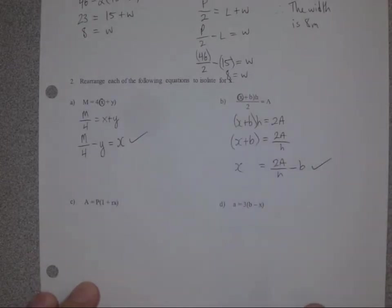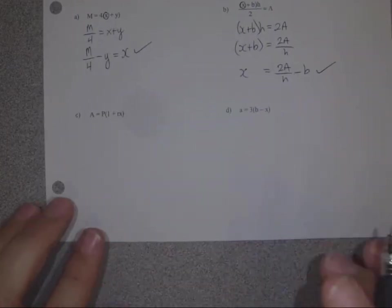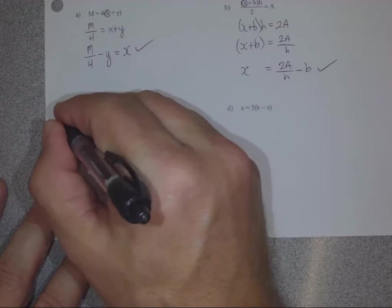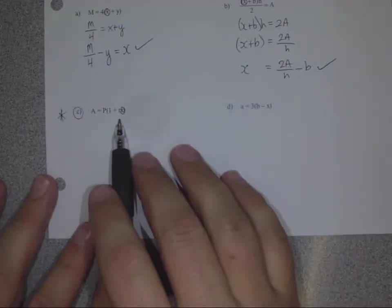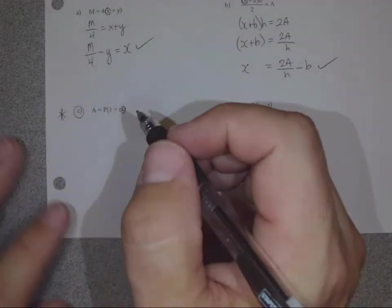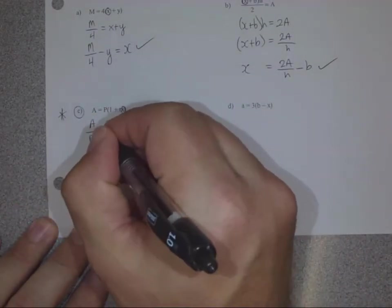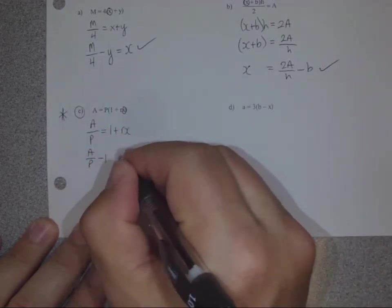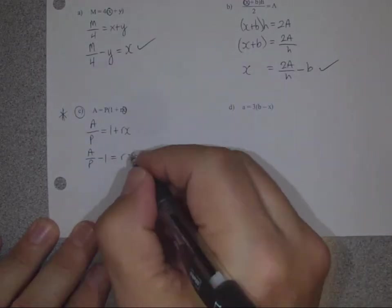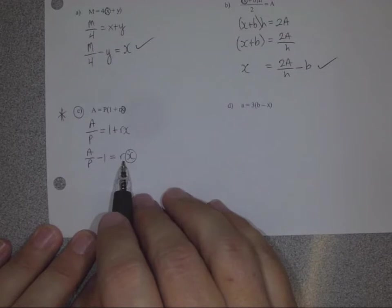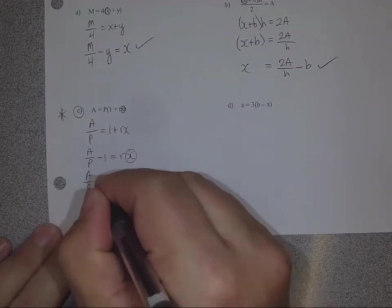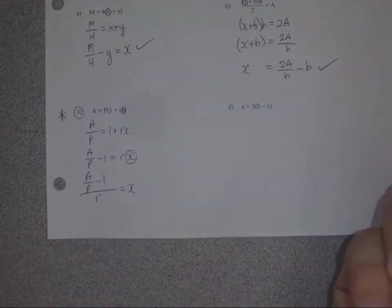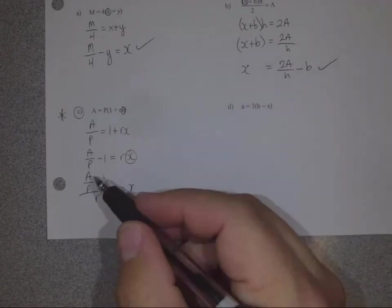So there's a and b done for you. c and d. c is actually a little trickier. c, I'm going to circle and star because that's a good candidate for distributive property. Let me show you why. If I do this quickly, we would get a divided by p equals 1 plus r times x. Then a divided by p minus 1 equals r times x. And if we're solving for x, we need to divide by r. So this whole thing is going to look pretty silly, but bear with me. Is a over p minus 1 divided by r? That doesn't look very nice. It's a correct answer, but it's not looking very good.